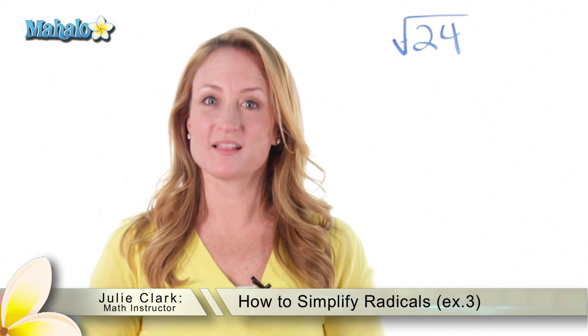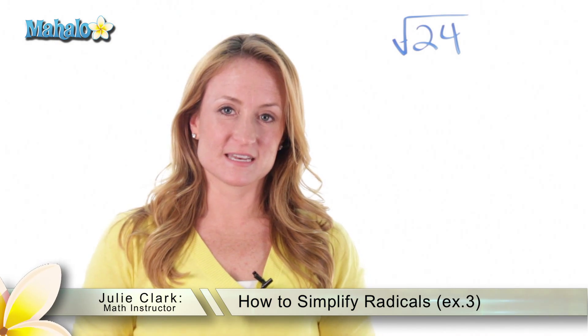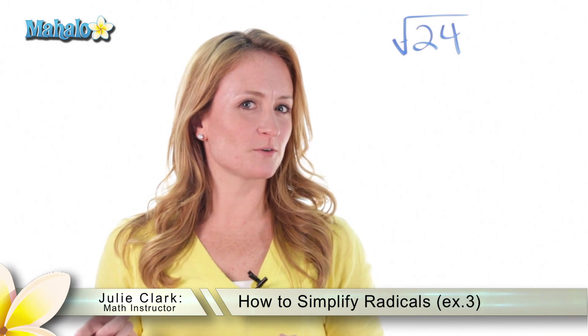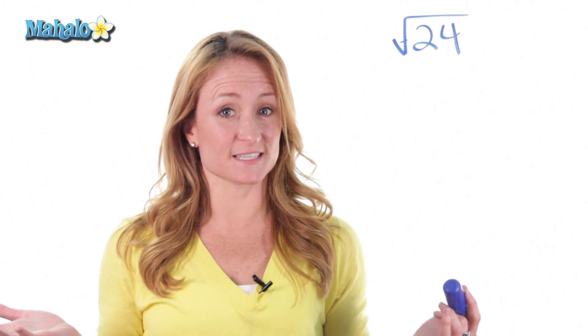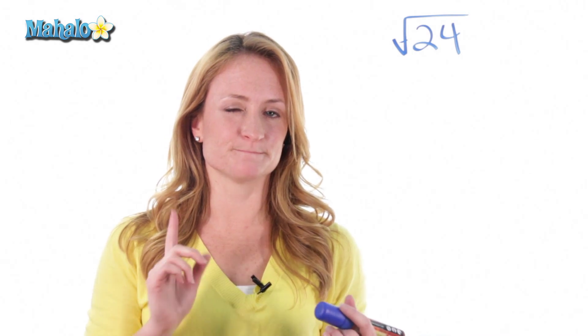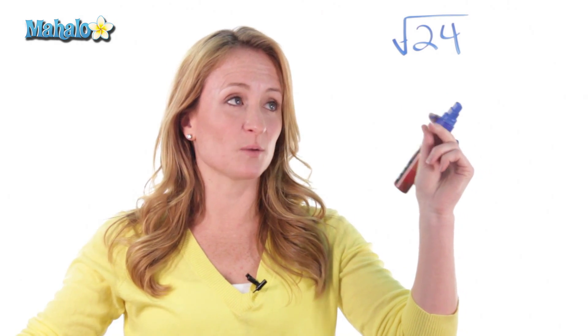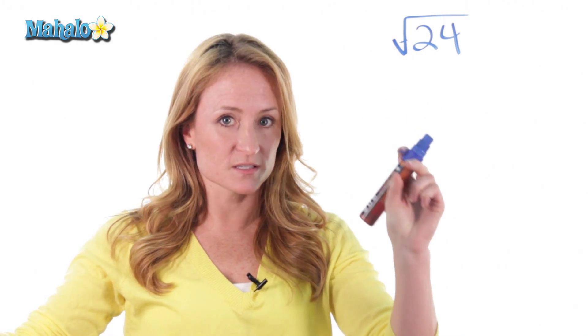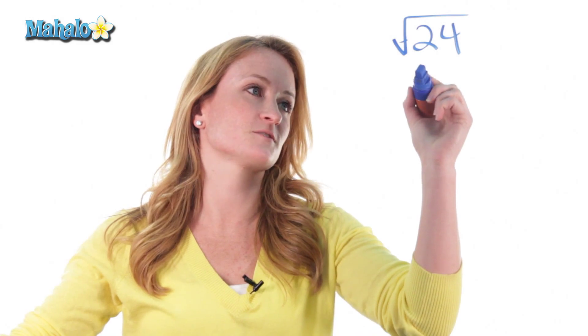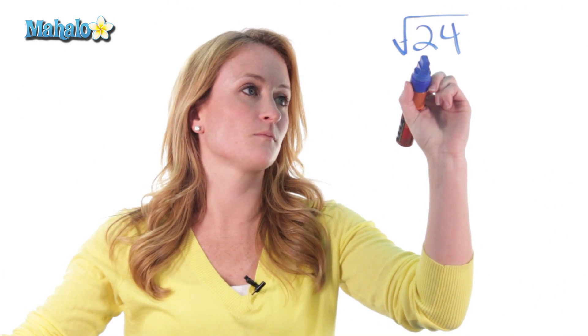Hey guys, it's Julie with mahalo.com. Now we just learned how to simplify a radical, but what if the problem doesn't work out as nicely as that last one did? Let's do another one. So we have the square root of 24. We're going to do the same thing and break it down into the smallest factors we possibly can.